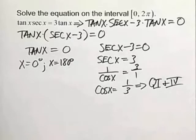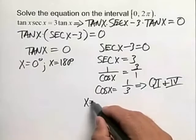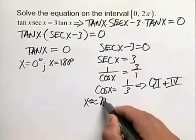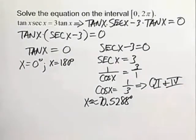This is our non-standard value for the cosine, so if you take the inverse cosine of both sides and you have your calculator in degree mode, we're going to come up with an angle of approximately 70.5288 degrees, and that's true to four decimal places.